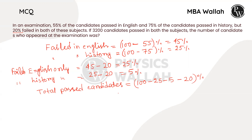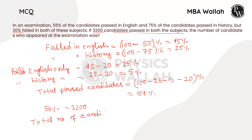It is equal to 50%. 3200 candidates passed in both the subjects, so 50% will be 6400.